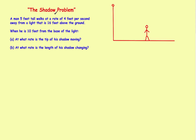The shadow problem goes like this: suppose you have a man who's five feet tall and he's walking away from a light pole at the rate of four feet per second. The light is 16 feet above the ground. The question wants to know — when the guy is 10 feet from the base of the light — at what rate is the tip of his shadow moving? And also, at what rate is the length of his shadow changing?